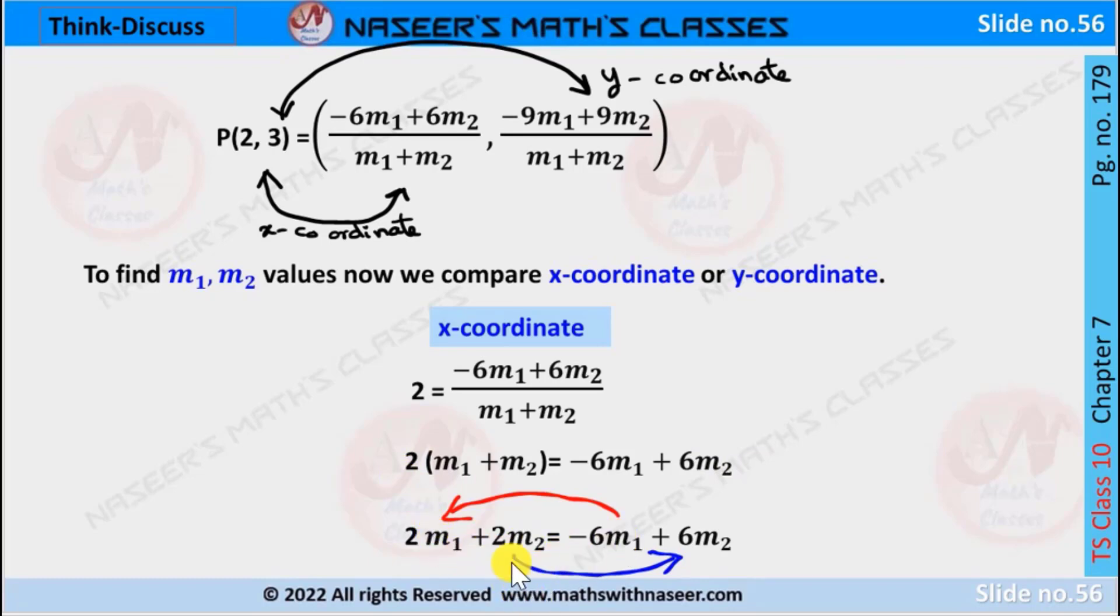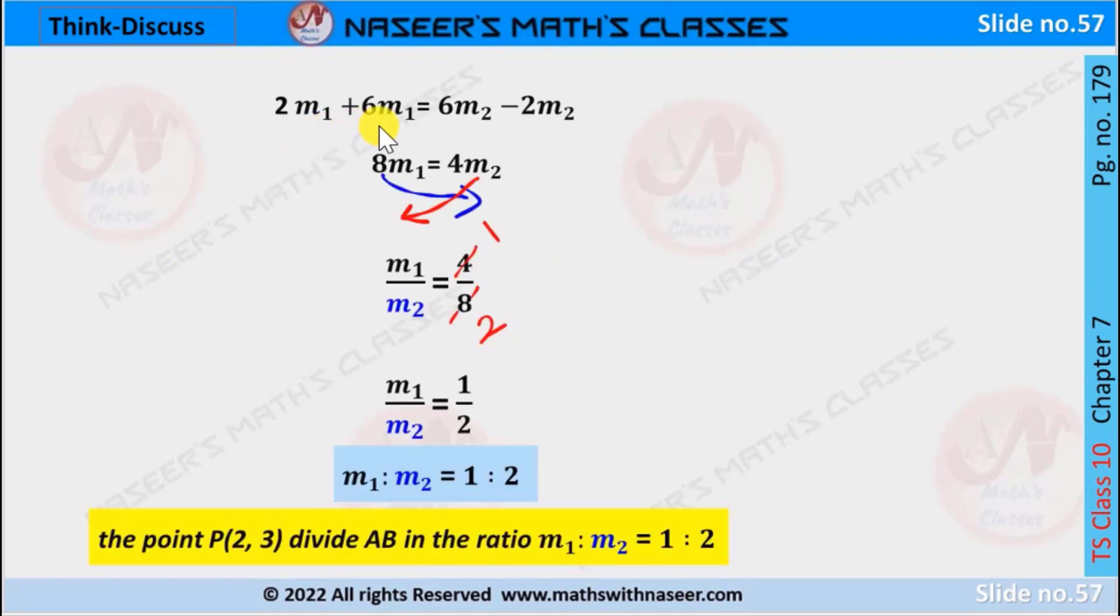Now we transpose 2m2 from LHS to RHS and -6m1 from RHS to LHS to simplify the equation. 2m1 + 6m1 is written as 8m1 and 6m2 - 2m2 is written as 4m2. Now we transpose m2 from RHS to denominator of LHS and we transpose 8 from LHS to denominator of RHS.